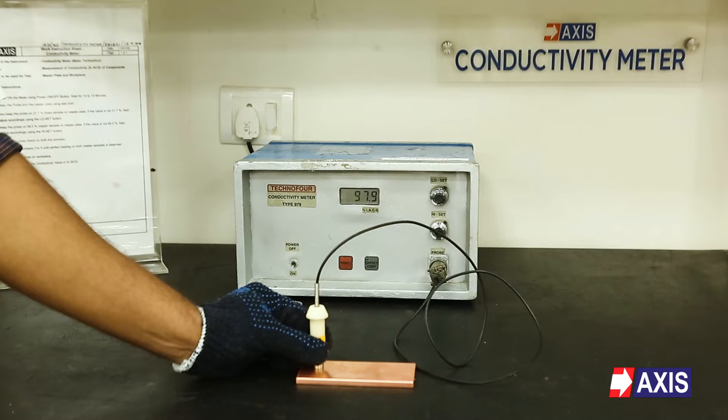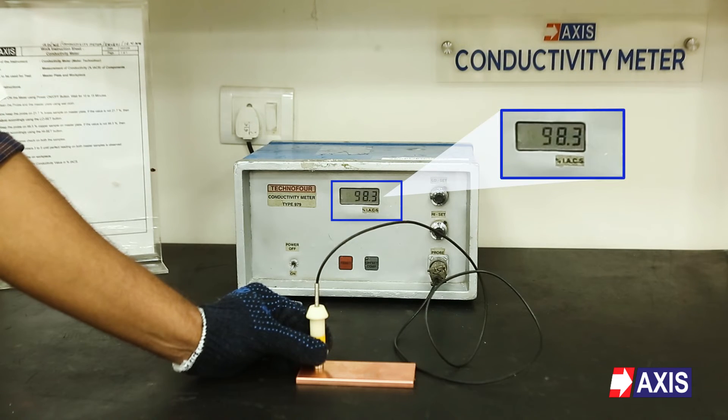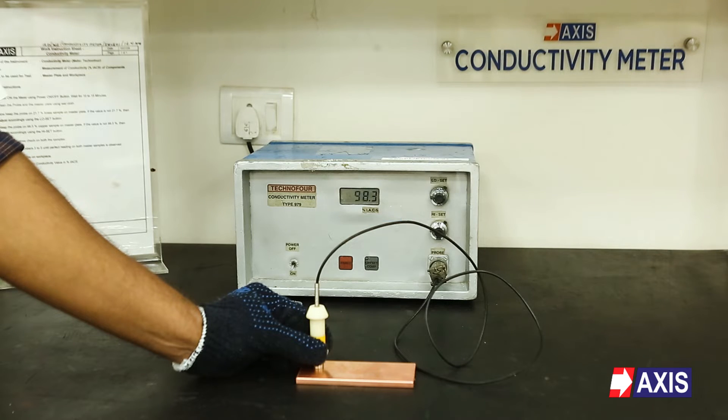As seen in the video, Axis copper busbars have an electrical conductivity of 98% IACS. This means that the copper material is 99.9% pure.